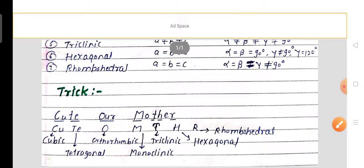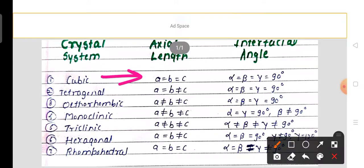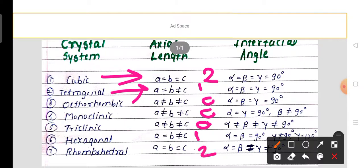First, let's look at the cubic crystal system. In the cubic crystal system, all axial lengths are equal: a = b = c. In the tetragonal system, there are two equal signs, meaning two axes are equal but one differs. From cubic to tetragonal to orthorhombic, the number of equal axial lengths decreases.